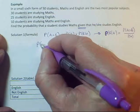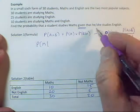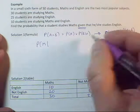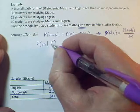So in this case, I want the probability of maths given that he or she studies English. So it's really important to identify the one that's being given.